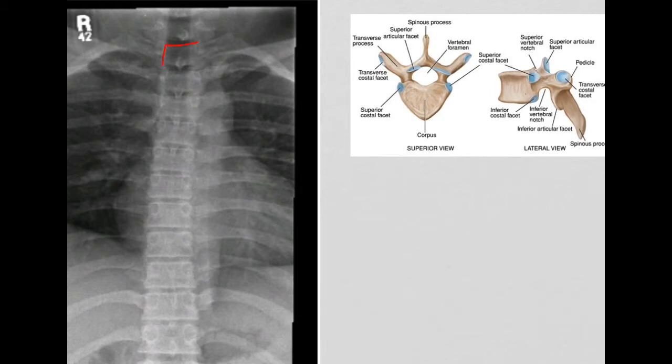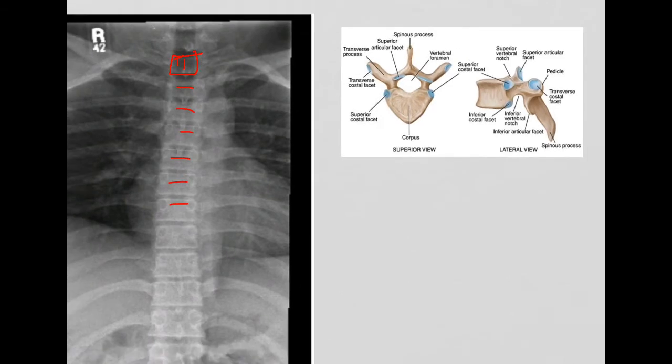Let's go back to our vertebral bodies. We said that this was T1. Let's count to make sure. There's T2, 3, 4, 5, 6, 7. Let's go back out.